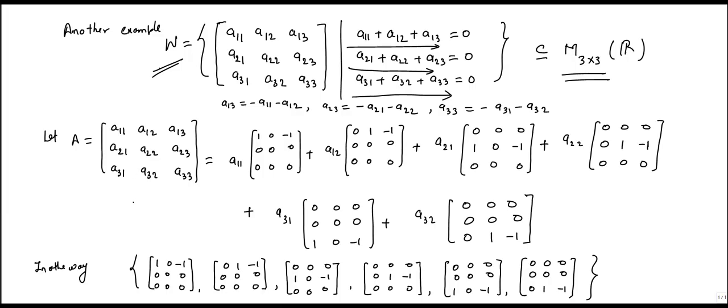Now, let us take an element from W. Let us say matrix A, which has entries a11, a12, a13, a21, a22, a23, a31, a32, a33. So this is a general matrix from W.